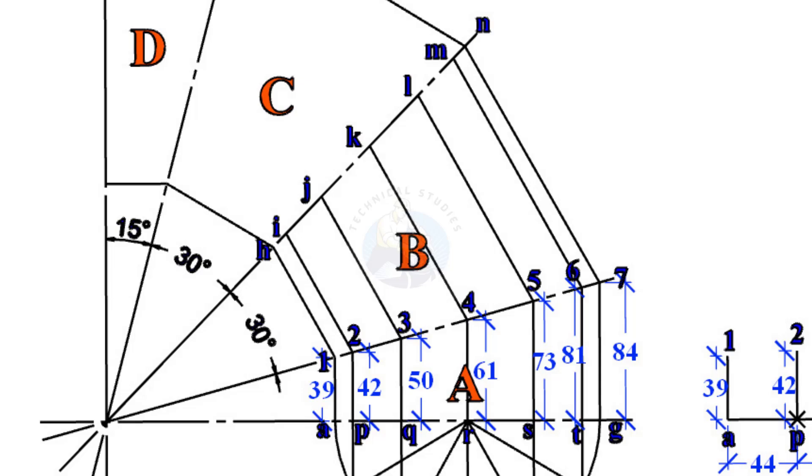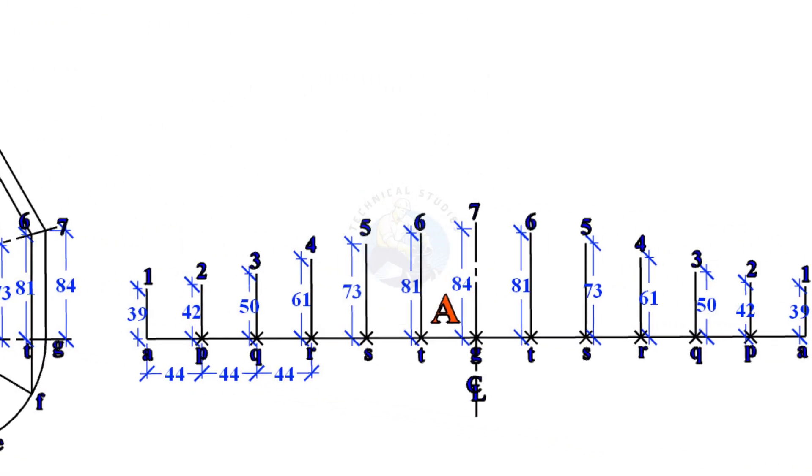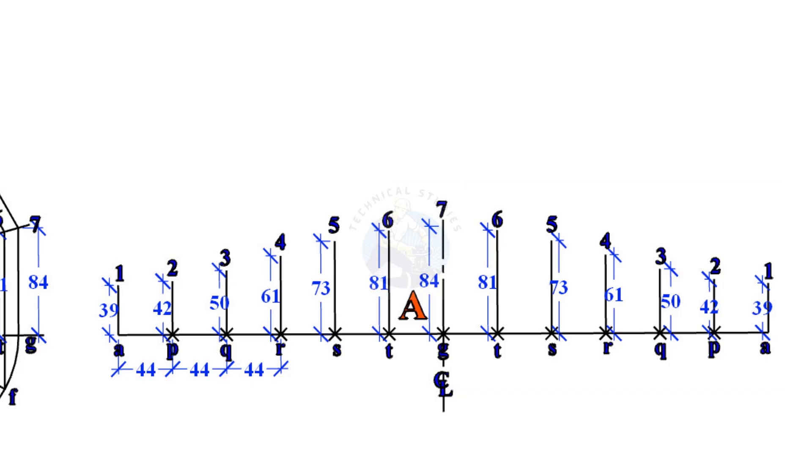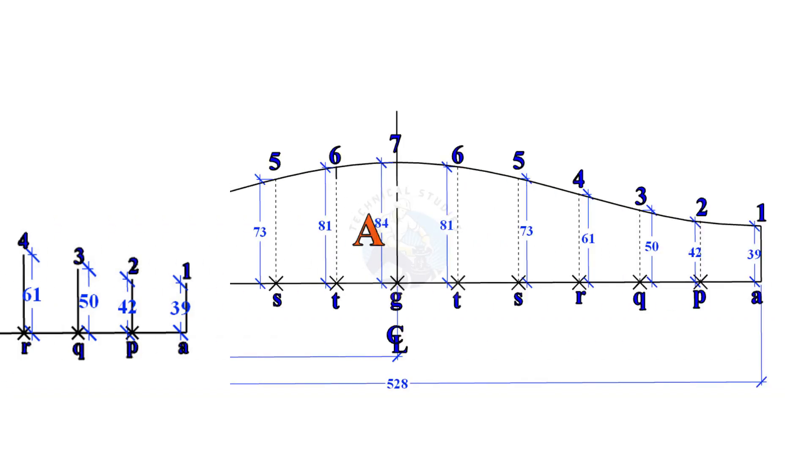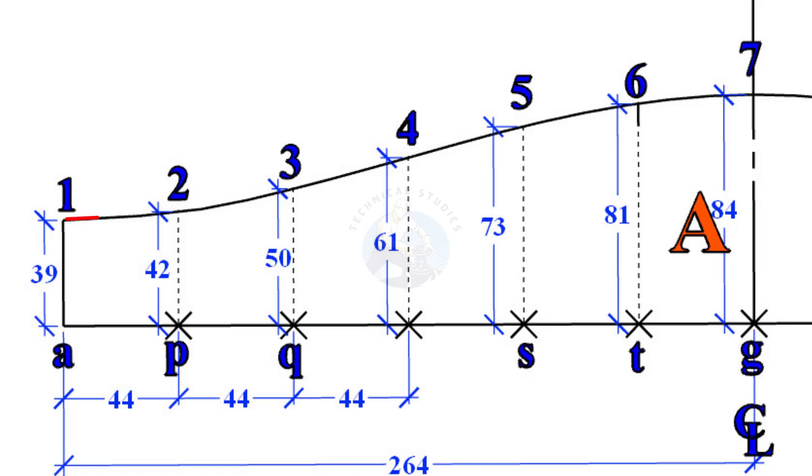Measure the distances A1, P2, Q3 etc. and take notes. Draw vertical lines as shown. Draw a line that flows smoothly between points 1, 2, 3.